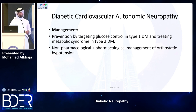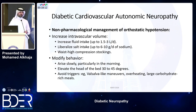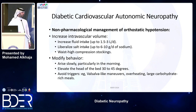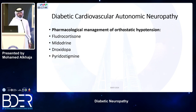Management begins with prevention, then non-pharmacological and pharmacological approaches. Non-pharmacological management aims to increase intravascular volume through increased fluid intake, liberalizing salt, and waist-high compression stockings. Behavioral modifications include arising slowly, elevating the head of the bed by 30–45 degrees, and avoiding Valsalva triggers. Pharmacological options include fludrocortisone, midodrine, droxidopa, and pyridostigmine.